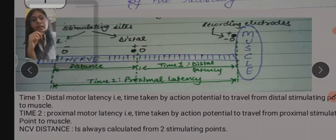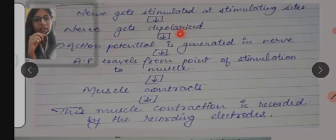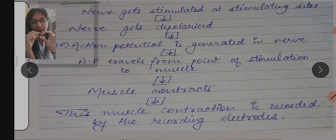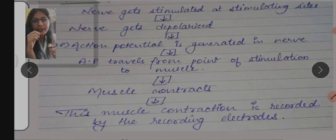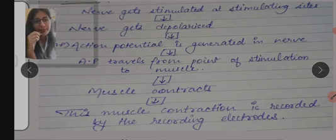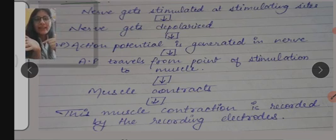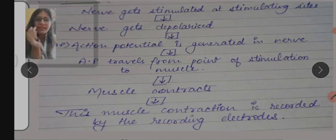Now the physiology: the nerve gets stimulated at the stimulating site. When we give stimulation through the stimulating electrode, the nerve gets depolarized. When the nerve gets depolarized from its actual polarized state, an action potential is generated in the nerve. That action potential travels from the point of stimulation to the muscle, and when it reaches the muscle, the muscle contracts. This muscle contraction is recorded by the recording electrodes. This is the basic physiology used in the motor nerve conduction test.